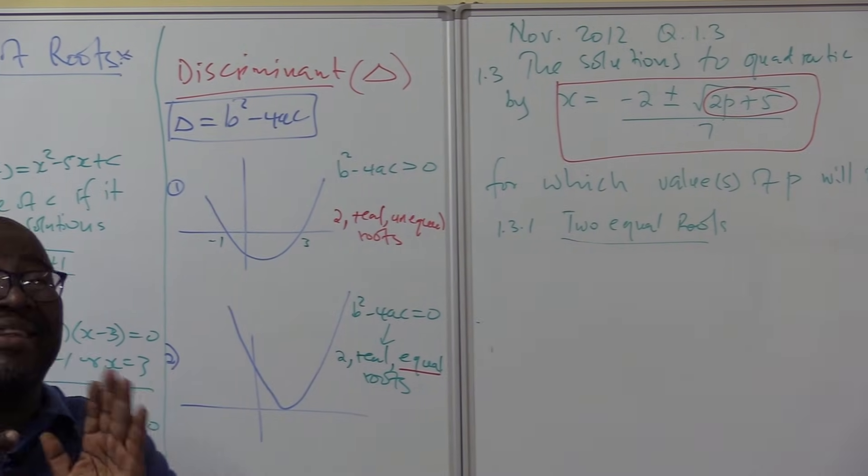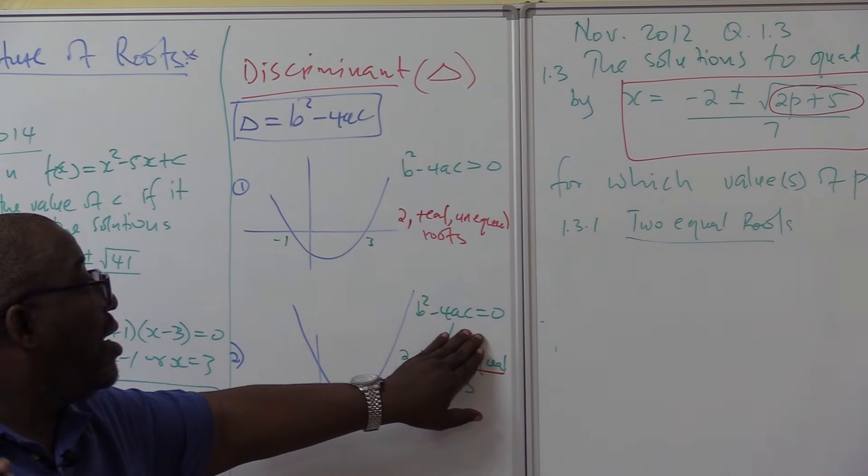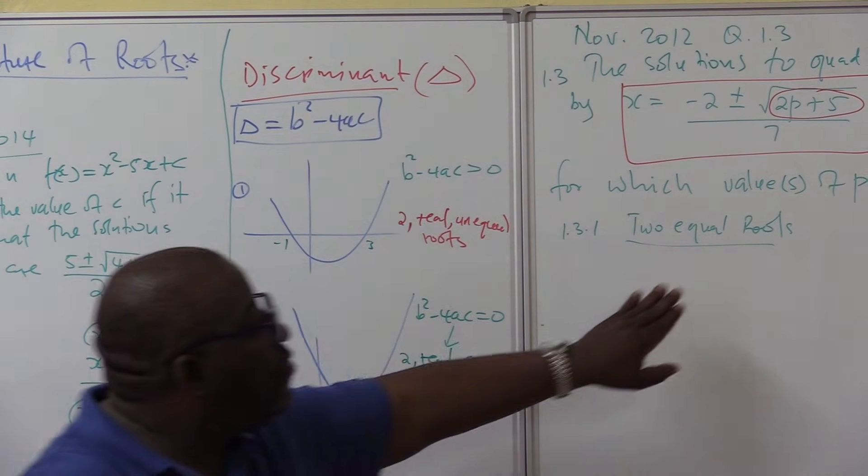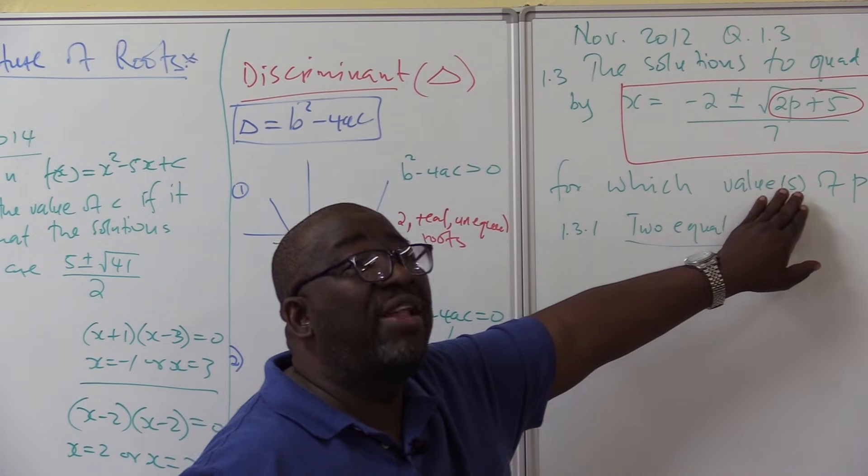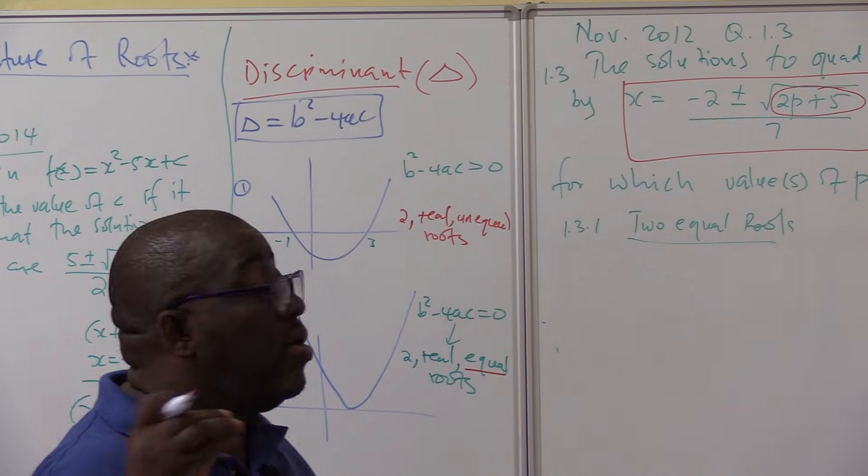If the equation only said value, we know that we're going to go straight here. If it says values only, we're going to go there. But we need to confuse you and say value or values so that you don't know which part it is, whether it's an inequality sign or equal sign.